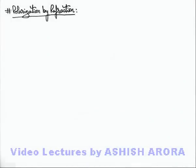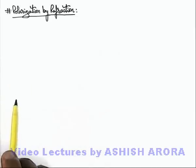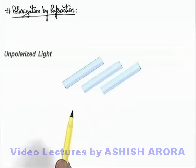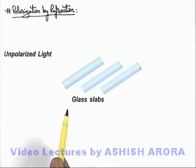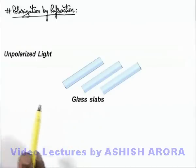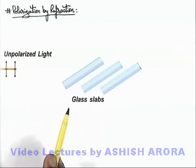Let us now discuss the phenomena of polarization by refraction. We can understand this phenomenon with the help of a realistic situation which is shown here. This is a pile of some glass slabs which are placed at some angle with the horizontal, and an unpolarized ordinary light is allowed to incident onto the system of these slabs.